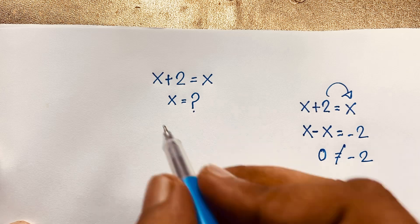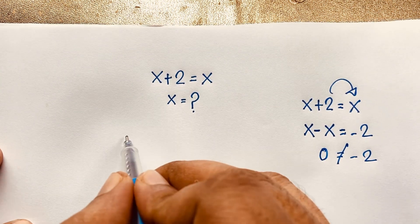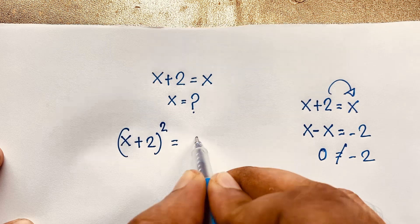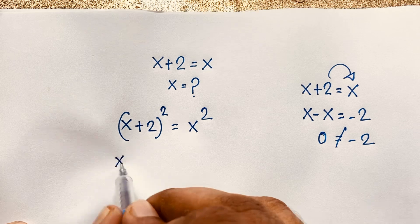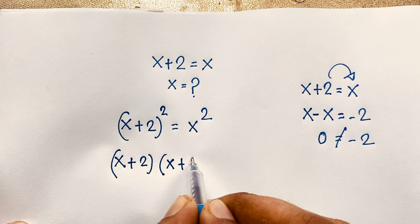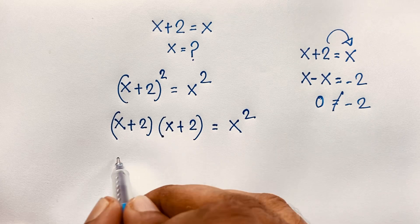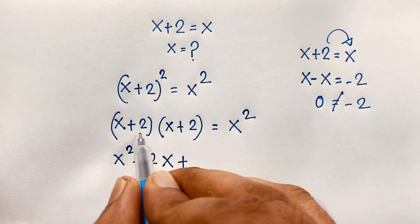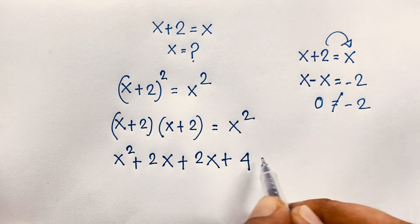Now how to solve this interesting math problem? I use both sides whole square. So it will be (x plus 2) squared is equal to x squared. I use both sides whole square. Now at this moment here is (x plus 2) times (x plus 2) and this is x squared. Now x times x it will be x squared, plus 2 times x it will be 2x, plus 2 times x, plus 2 times 2 it will be 4. Then here is x squared.